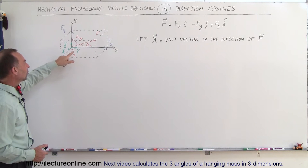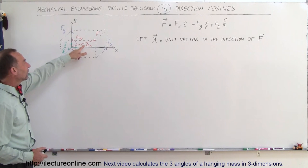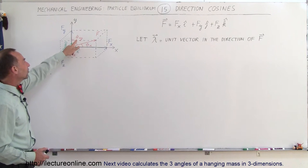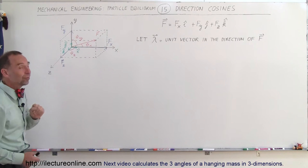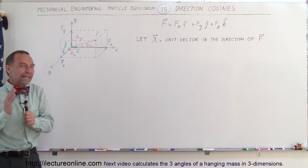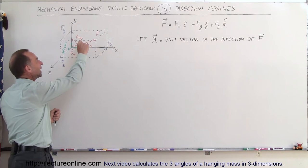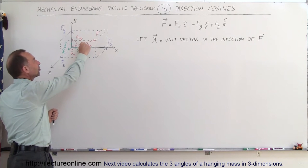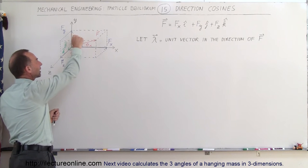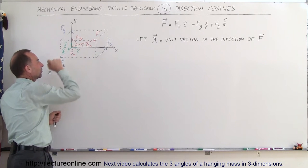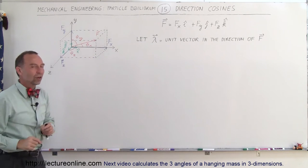You can see that there are angles — theta sub x, theta sub y, and theta sub z. Those angles are the angles between the vector and the x-axis, between the vector and the y-axis, and between the vector and the z-axis.